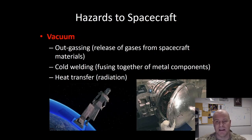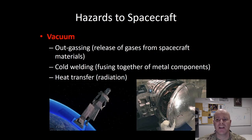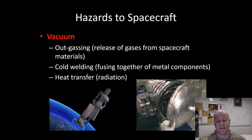Another interesting effect of the vacuum of space is that radiation becomes the only heat transfer mechanism. Convection and conduction occur through mediums such as air or water. Since space is a vacuum, radiation is the only method of heat transfer, which limits the effectiveness of the satellite to get rid of excess heat.